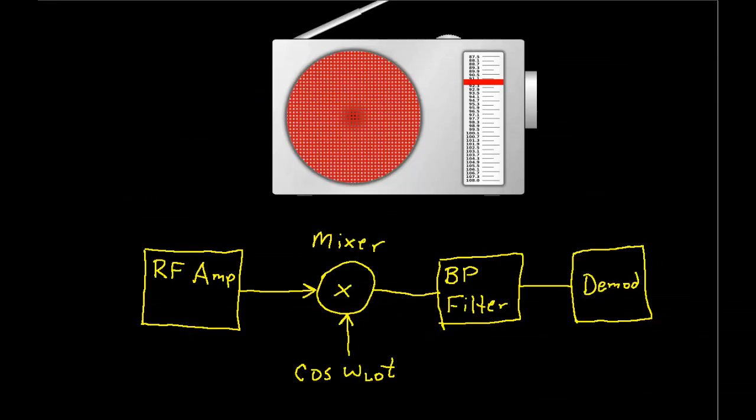Now we want to turn our attention to the radio receiver. We want to understand how the receiver separates the signal we want from all the signals from the stations that we don't want. I've drawn a block diagram of how the AM radio receiver does this, and we'll go through it in the same order that the received radio signals go through it. The first thing is the radio antenna, connected to what's called the RF amplifier — RF stands for radio frequency. The RF amplifier's output goes into a mixer, and the output of the mixer goes through a bandpass filter, and then into the demodulator. The output of the demodulator is the sound I want to listen to.